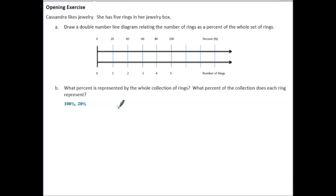Part B says what percent is represented by the whole collection of rings and what percent of the collection does each ring represent. So the entire collection is the whole and that is represented by 100 percent. And as we talked about, each of the rings is going up by 20 percent each time so each ring represents 20 percent of the collection.